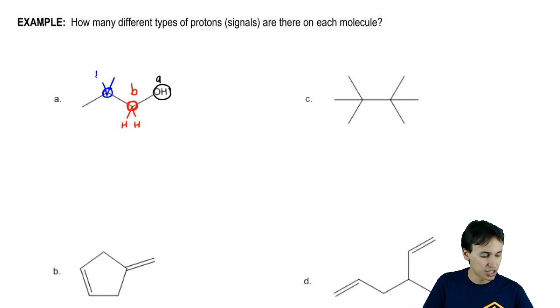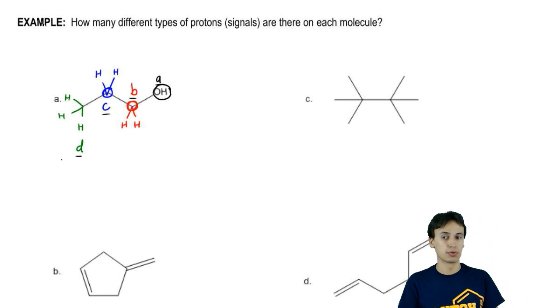The two hydrogens attached to this atom are the third type. Then finally, the three hydrogens on this last carbon are the fourth. In total, we get one, two, three, four different types of protons. Not so bad.